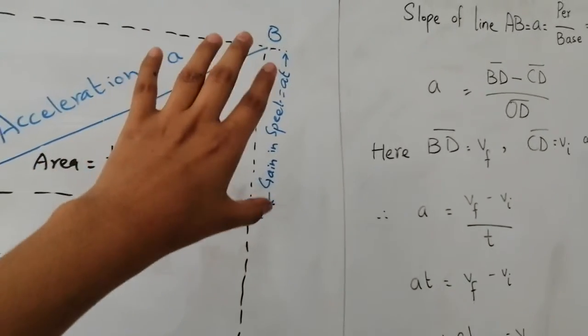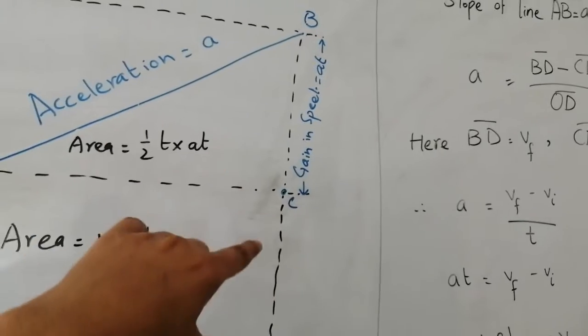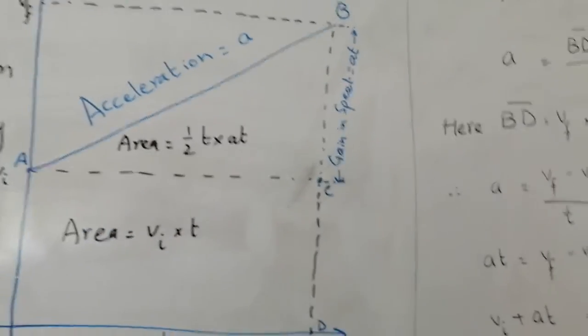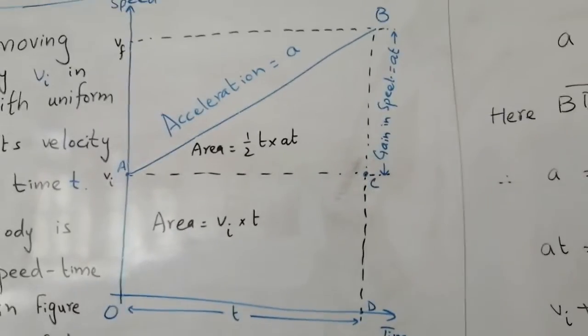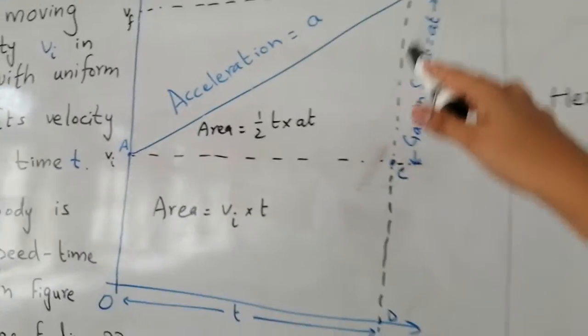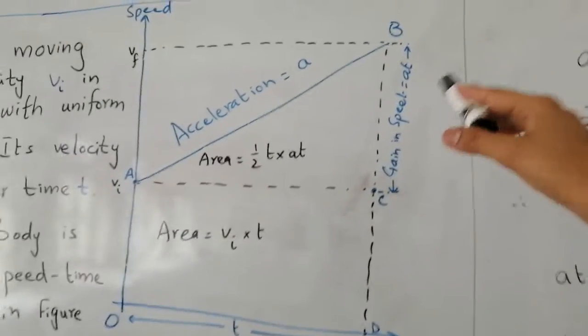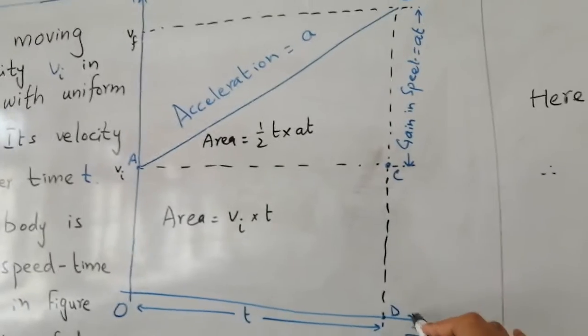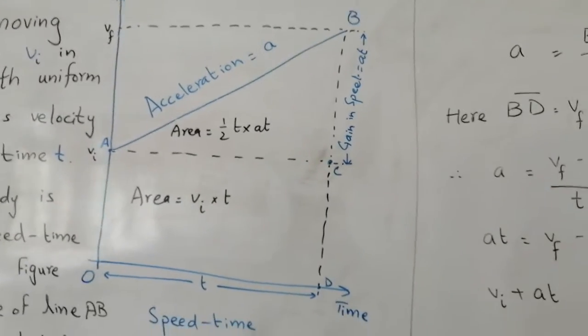As we know, the value of AC is not given directly. So how can we calculate the value of BC? We have BD. If we remove CD from BD, we get BC. So BC equals BD minus CD.